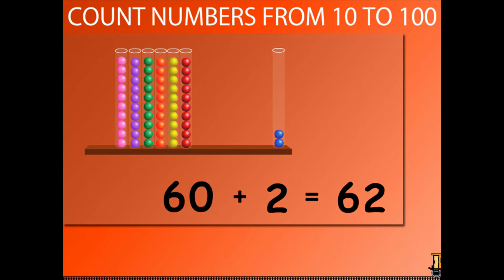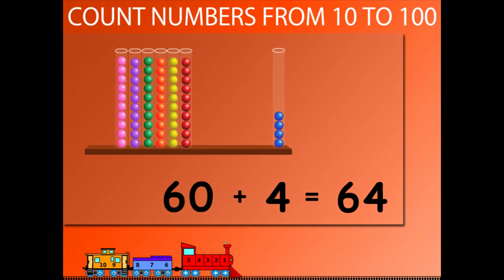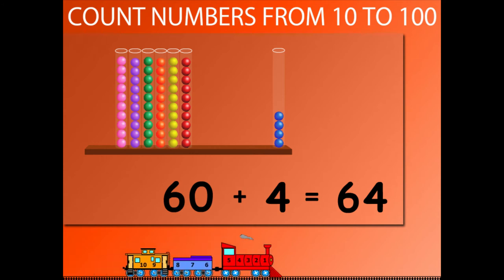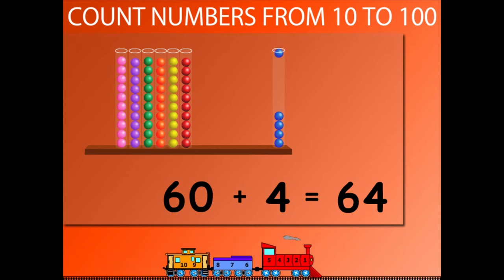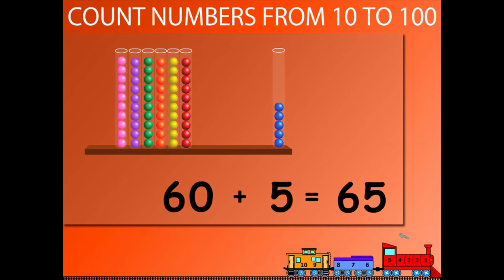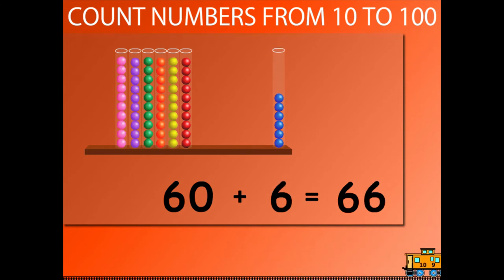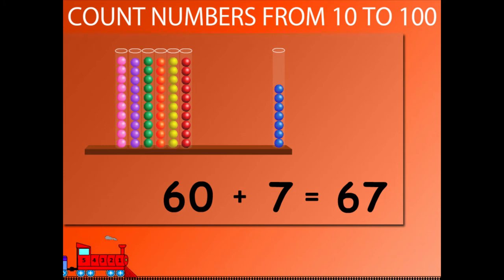60 plus 3 is equal to 63. 60 plus 4 is equal to 64. 60 plus 5 is equal to 65. 60 plus 6 is equal to 66. 60 plus 7 is equal to 67.